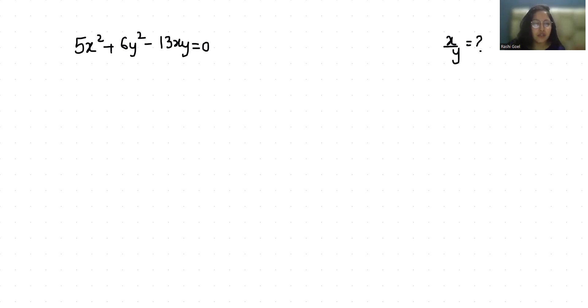So let's start with today's video solution. First I can write this equation as 5x² - 13xy + 6y² = 0 and this 13xy I can write it as negative 10xy and negative 3xy plus 6y² equals 0.